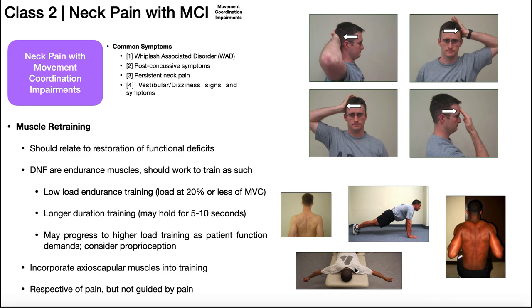In the prone position, horizontal abduction is shown — arms start at the sides and lift out to either side, working the middle traps and rhomboids. These are just some examples, by no means all of them. In general, muscle retraining should target the impairments, with a specific focus on neck endurance muscles and the shoulder girdle.